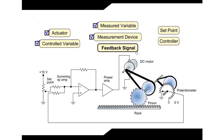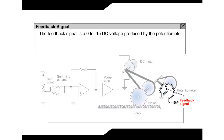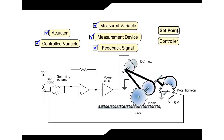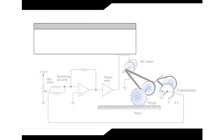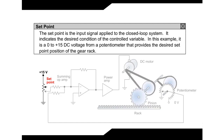Feedback Signal: The feedback signal is a 0 to negative 15V DC voltage produced by the potentiometer. Set Point: The set point is the input signal applied to the closed loop system. It indicates the desired condition of the controlled variable. In this example, it is a 0 to positive 15V DC voltage from a potentiometer that provides the desired set point position of the gear rack.